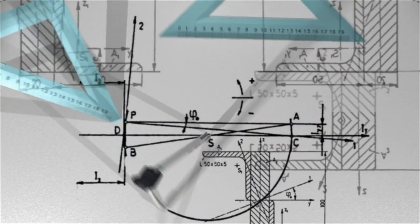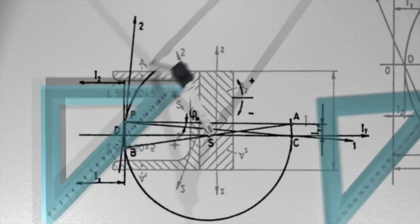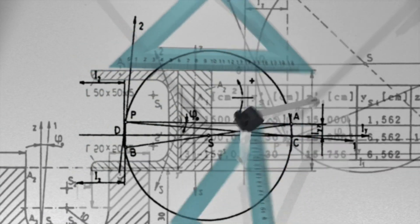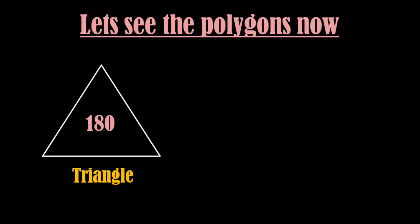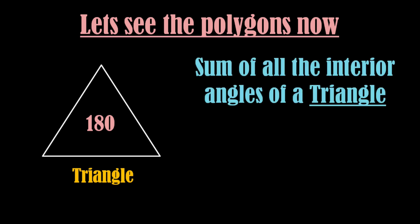But is this phenomenon exclusive to circles? Or does it extend to other shapes such as polygons? Let's have a triangle. The sum of the interior angles of a triangle is 180 degrees. Adding the digits of this number gives us 9.